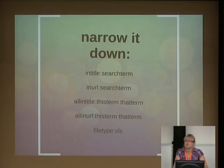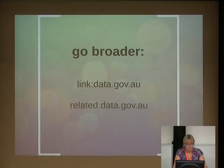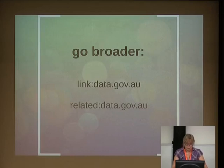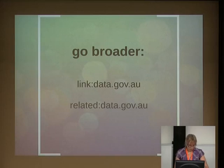You sometimes get interesting things come up too, like the entire contact list for an organisation that happened to get crawled by Google. You can also go broader — data.gov.au is actually a good example of this. You can find all the sites that link to a site and all the sites related to a site, and you'll often find quite a lot of relevant things that might not have popped up in any other search. If you do a 'related:' search on data.gov.au, you'll get all the state data portals and Ausgol and so on.